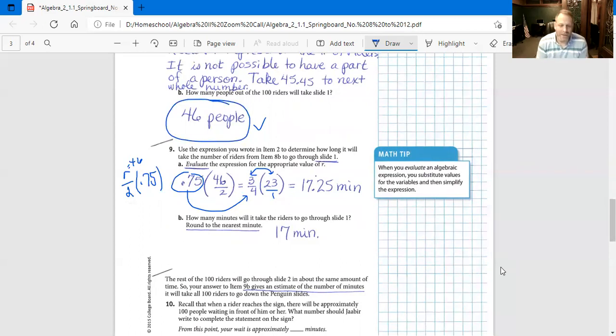Let's go to B. How many minutes will it take the riders to go through slide 1, round to the nearest minute? So 17 minutes. These aren't people, so you can obviously round down. This is not anywhere near 17.50 and above, so we're going to round down to 17 minutes.